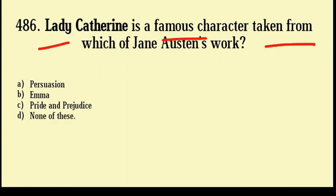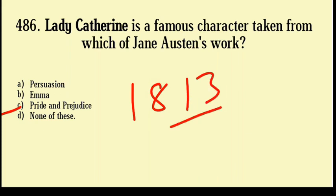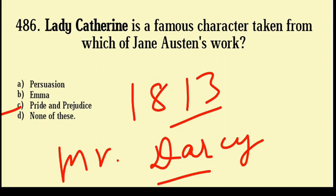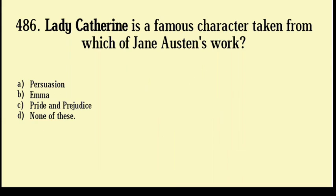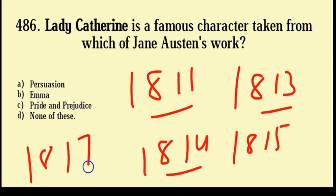Lady Catherine is a famous character taken from which of Jane Austen's works? Persuasion, Emma, Pride and Prejudice, None of these. Correct answer: Option number C, Pride and Prejudice. Lady Catherine is the overbearing aunt of Mr. Darcy, who is the main protagonist of the novel. Lady Catherine is the wealthy owner of Rosing Park. Jane Austen is known for her six major novels: Sense and Sensibility (1811), Pride and Prejudice (1813), Mansfield Park (1814), Emma (1815), Persuasion and Northanger Abbey, both in 1817.